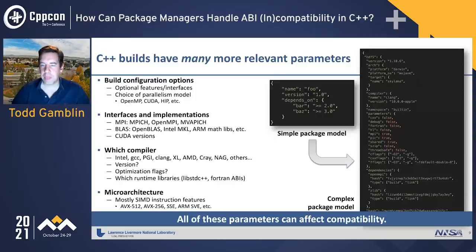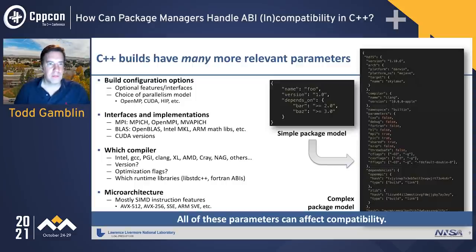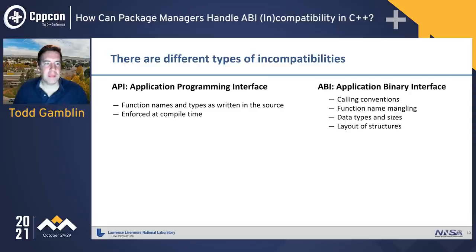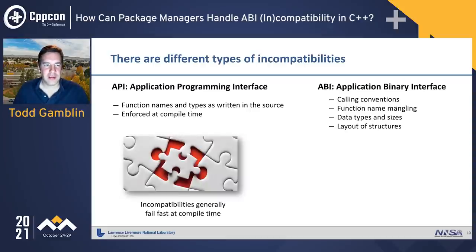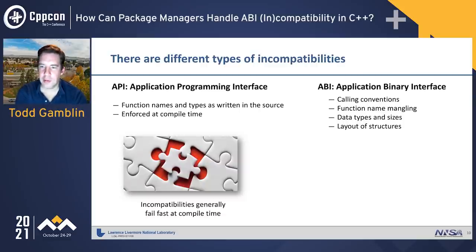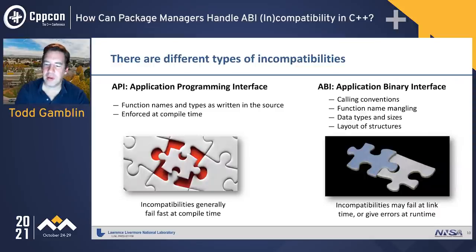This simple package model turns into something much more complicated. You have all this extra metadata you want to track with the nodes in your graph — everything that is potentially ABI-relevant. So what is ABI? API is your application programming interface — that's source level, enforced at compile time. Your compiler will catch API problems. ABI issues are things like calling conventions, function name mangling, data types and sizes, and layout of structures — things that can change based on the language standard, compiler, or libraries you depend on. If you get ABI issues, things may look fine at compile time but you get failures at link time or subtle errors at runtime.